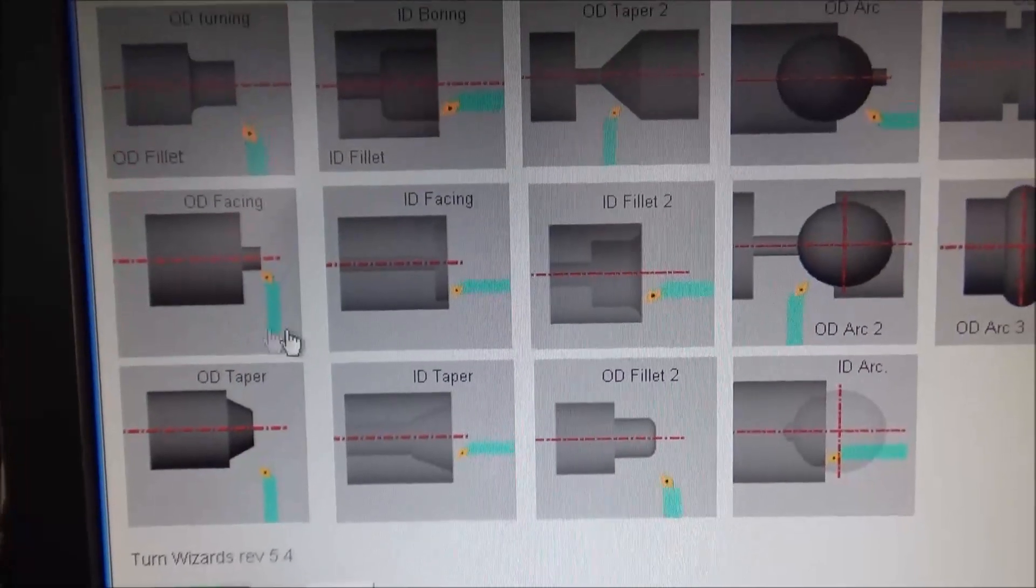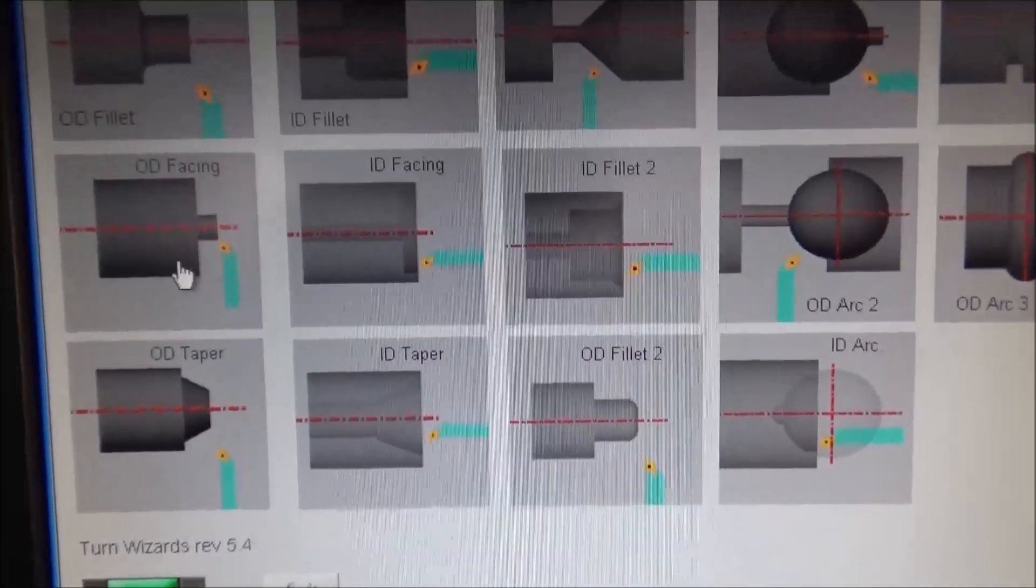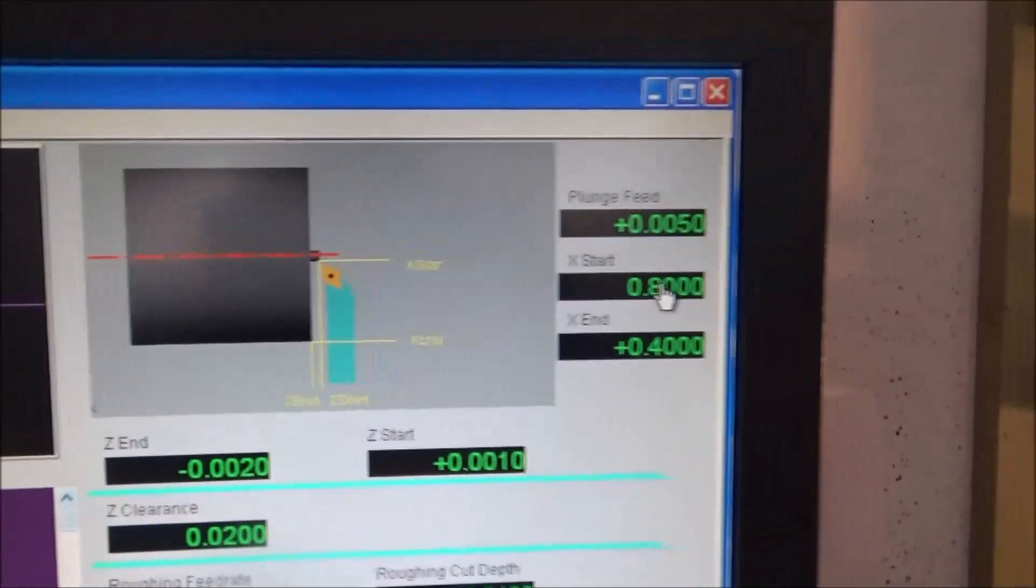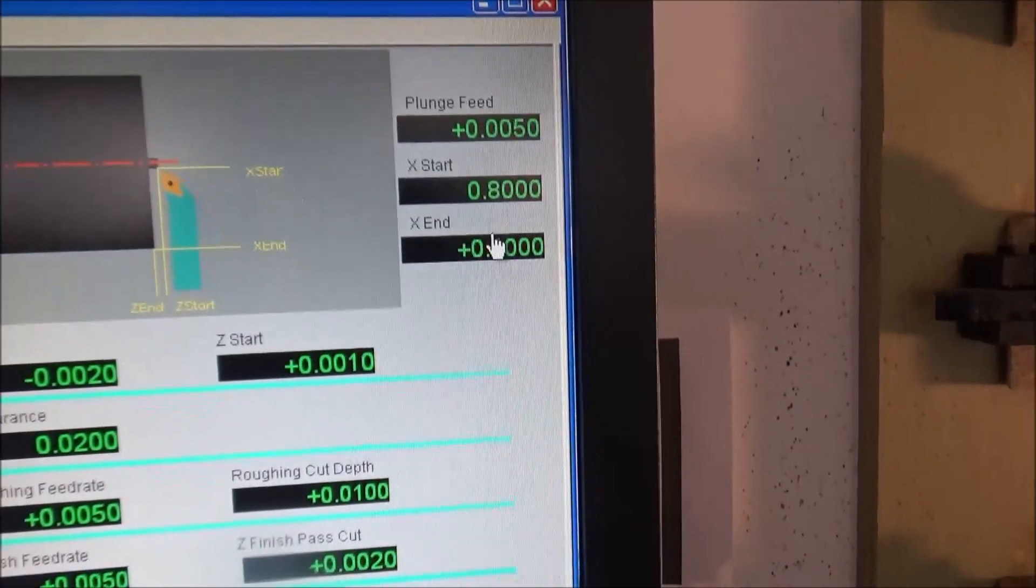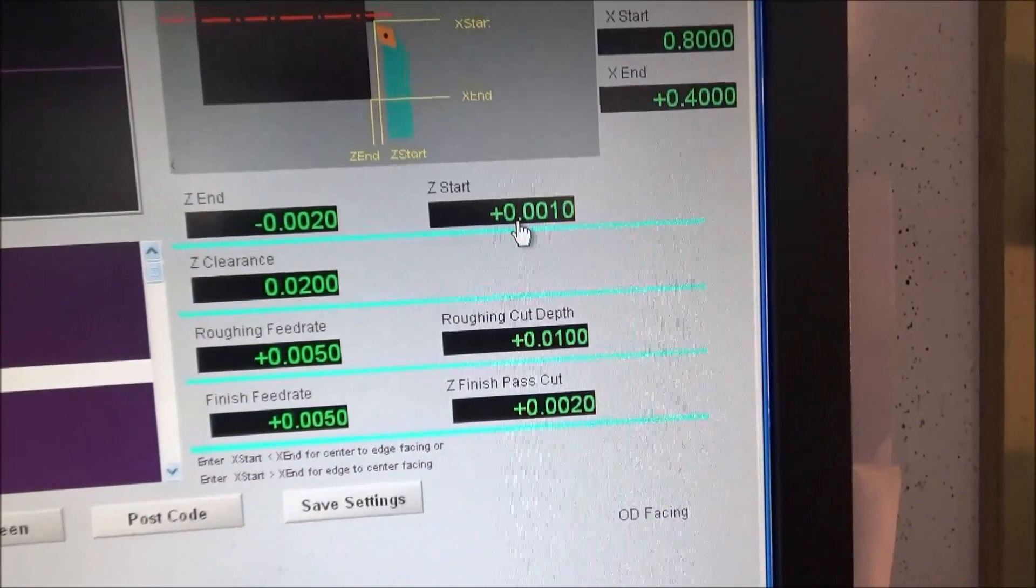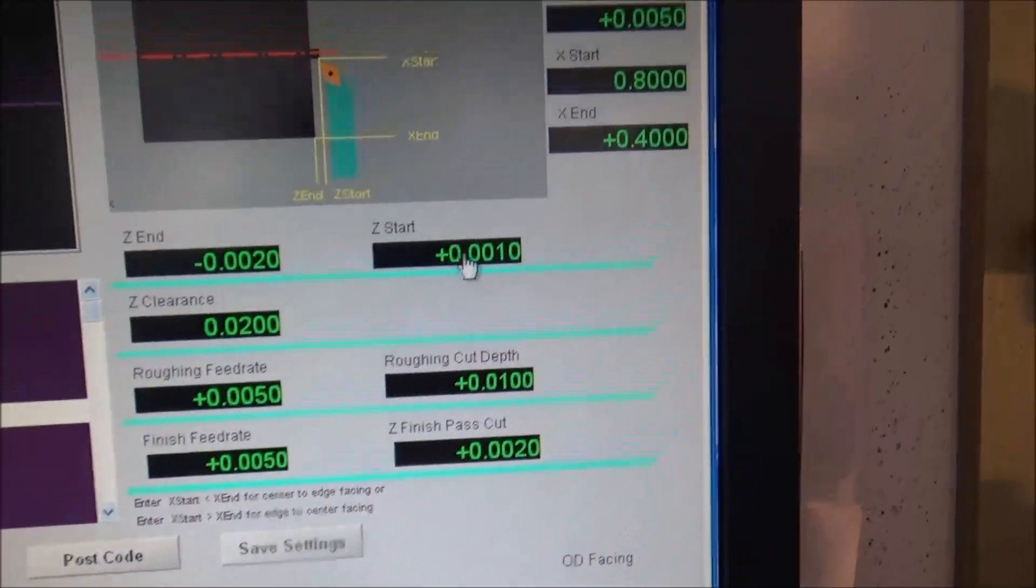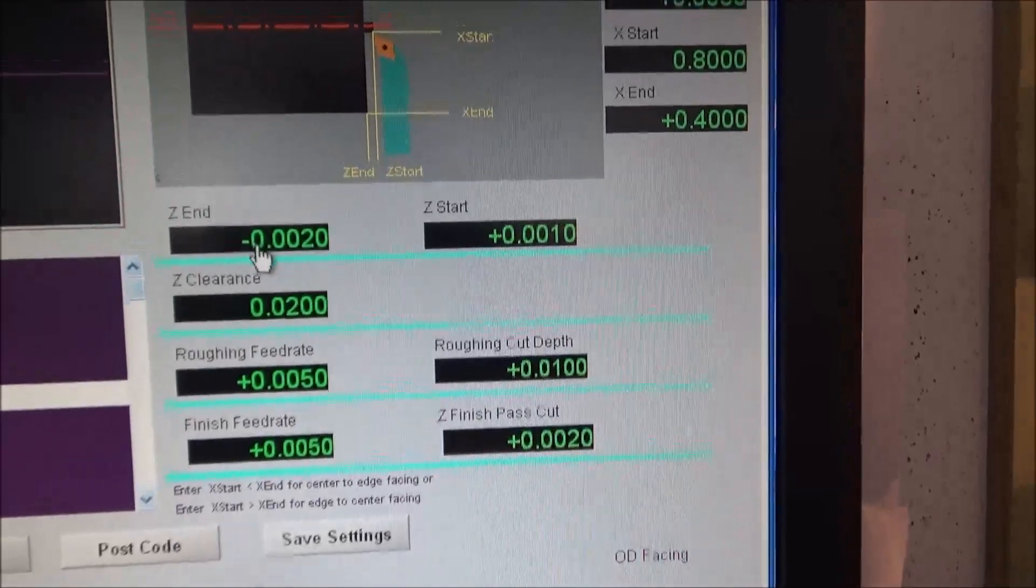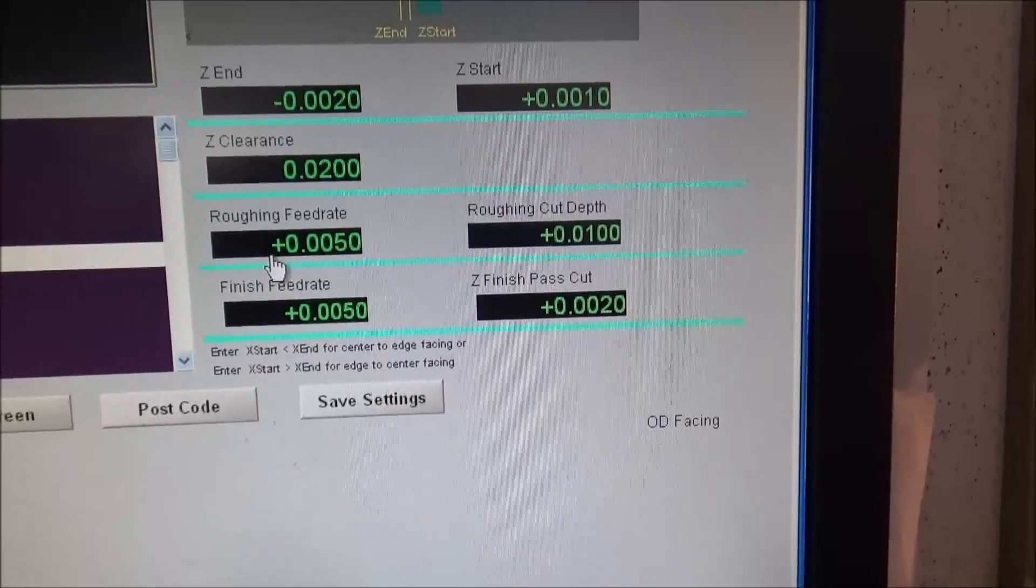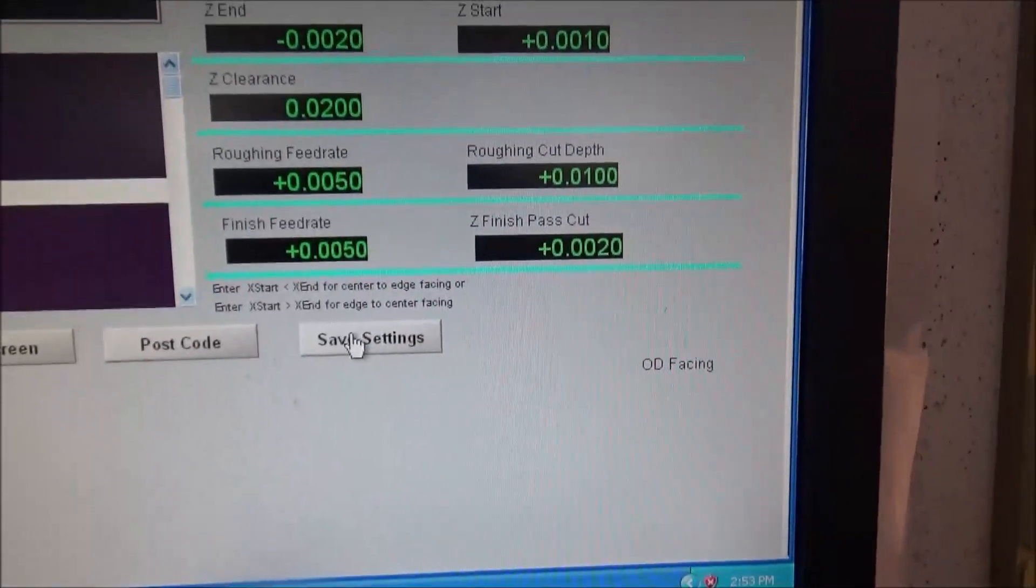I just pulled that up and put in my information. So you click on that and it wants your plunge feed rate, your X start position, your X end position, and then it wants your Z start position and your Z end position, your roughing feed rate and your finish feed rate.